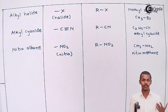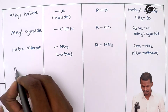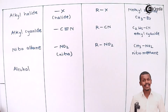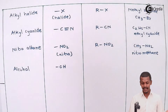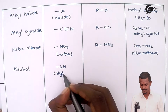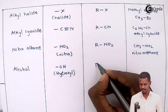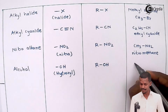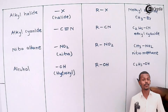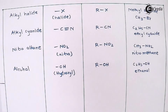The next class is alcohol. Alcohols are identified by the presence of the OH group, known as the hydroxyl group. When this hydroxyl group forms a bond with an alkyl group, the general formula is ROH. An example is C2H5OH, which is called ethanol or ethyl alcohol.